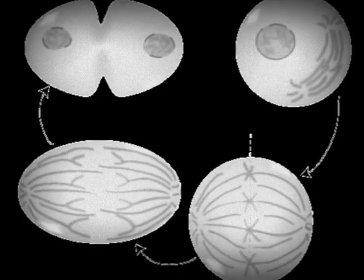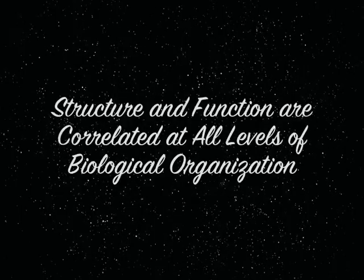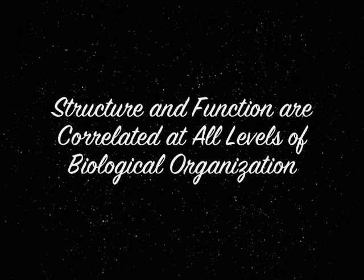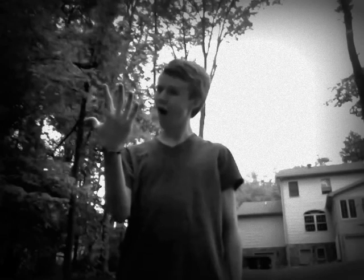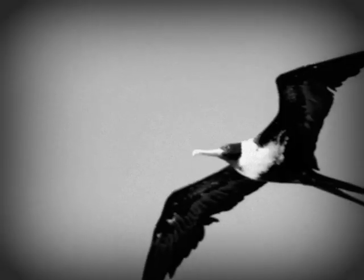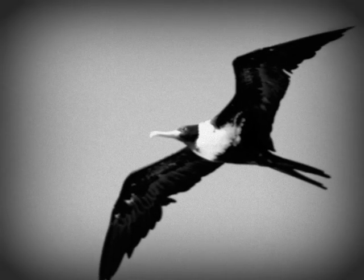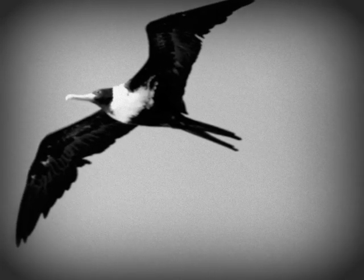Even still, your cells are growing and dividing. Structure and function are correlated at all levels of biological organization. Look at little Johnny's hand — think about what a hand does. Hands are used primarily to pick things up. The shape of your hand is the reason why it functions like it does. The form of everything directly affects how it functions. Take a bird, for example — the structure of its wings allows it to fly.